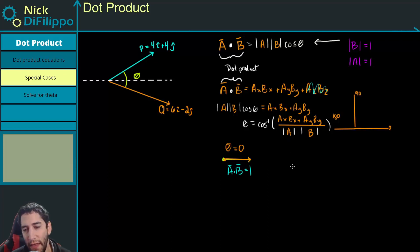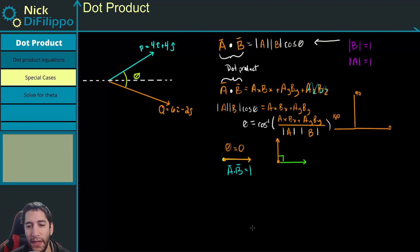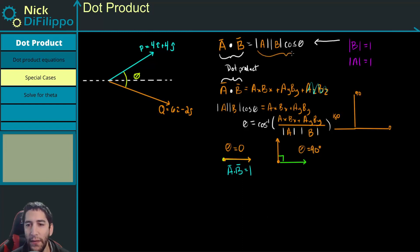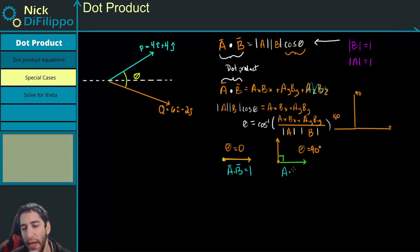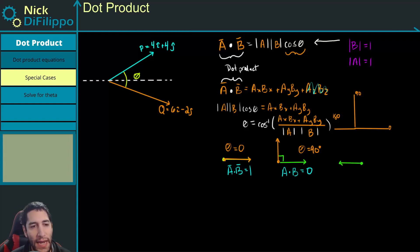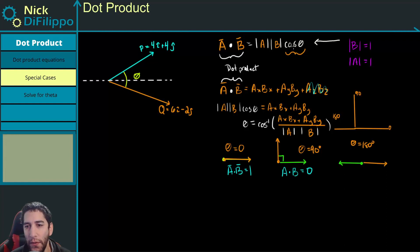If you have two vectors that are perpendicular to each other, then theta is equal to 90 degrees. The cosine of 90 degrees is 0, so A dot B is equal to 0. The last special case is when theta is equal to 180 degrees. The cosine of 180 is minus 1, so A dot B is equal to minus 1.